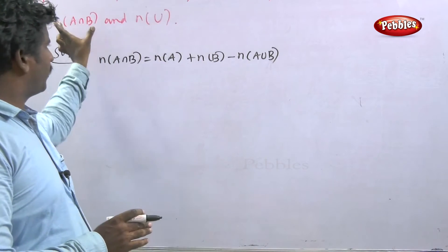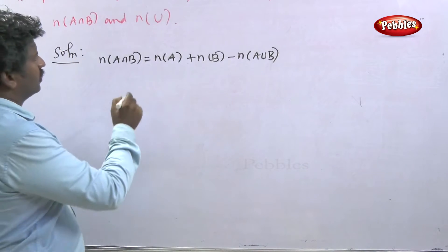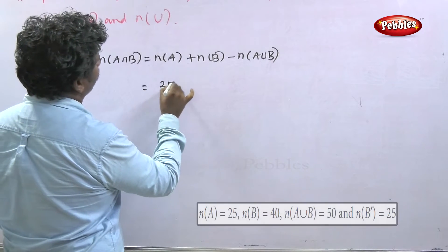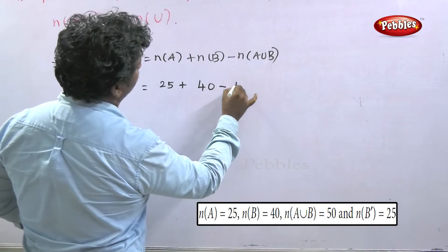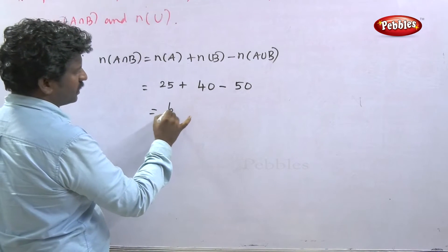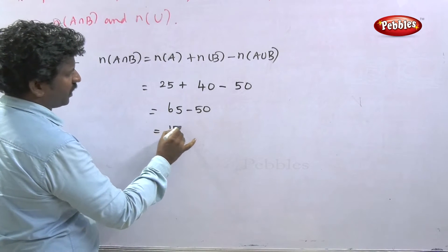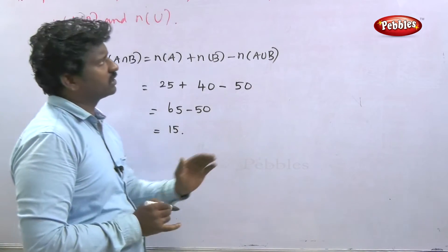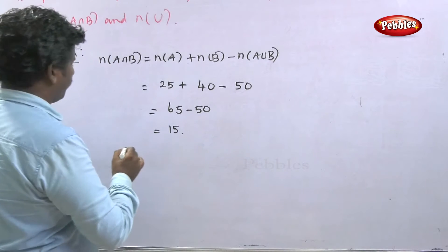Substituting the values: n of A is 25, n of B is 40, n of A union B is 50. So 25 plus 40 equals 65, minus 50 equals 15. Therefore n of A intersection B is equal to 15.